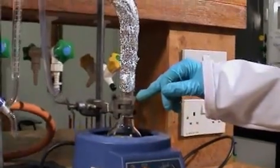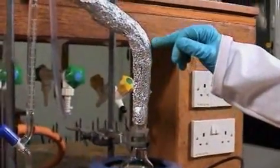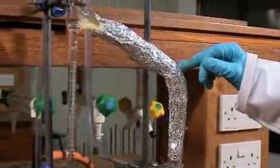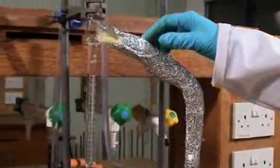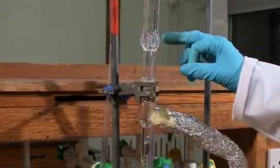The Dean Stark apparatus fits into the round bottom flask. This is insulated with glass wool and aluminum foil. A reflux condenser is attached to the top of the Dean Stark apparatus.